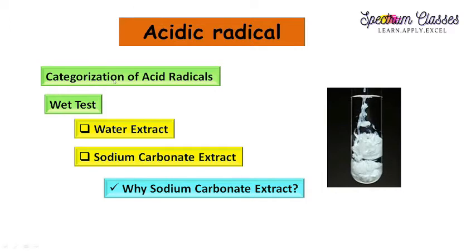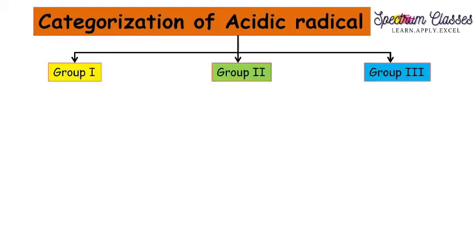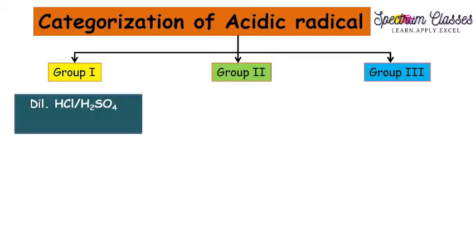First, we are going to discuss the categorization of acid radicals. These acid radicals are categorized into three different groups: Group 1, Group 2, and Group 3. These groups are decided based on their group reagents. For Group 1, the group reagent is dilute HCl or dilute H₂SO₄.